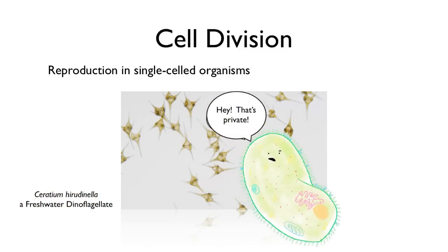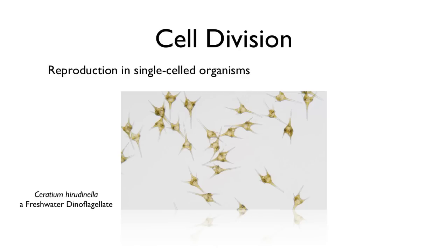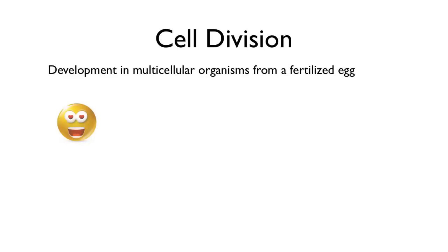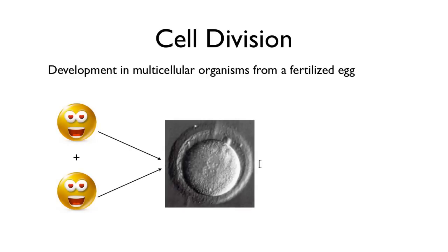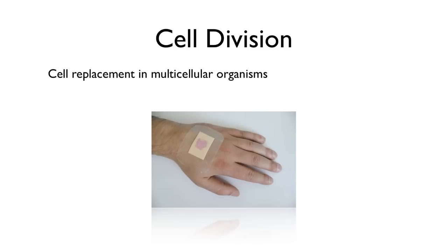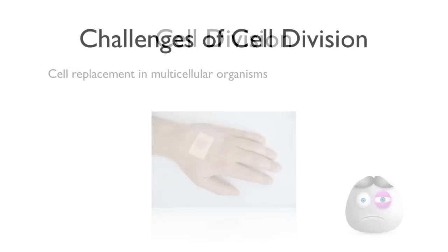For these guys, it's all about reproduction, and cell division is important for single-cell organisms and for colonial organisms like this coral. They can grow asexually by cloning themselves, and they can also reproduce sexually where they shuffle their genes. This basic cell division we're talking about today is also important for us, because it allows for the development of a single fertilized egg into a baby, and it allows you to replace cells that get worn out or damaged.